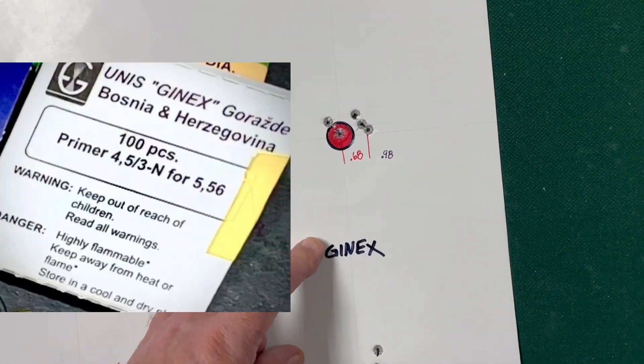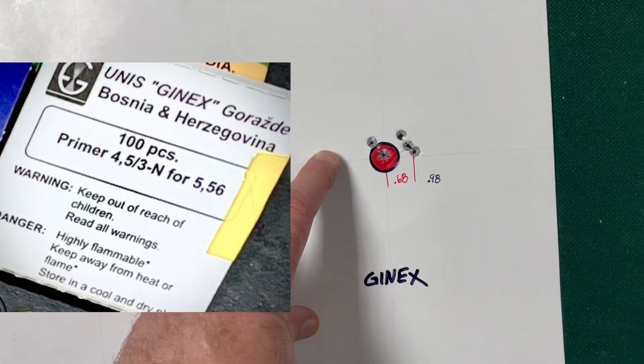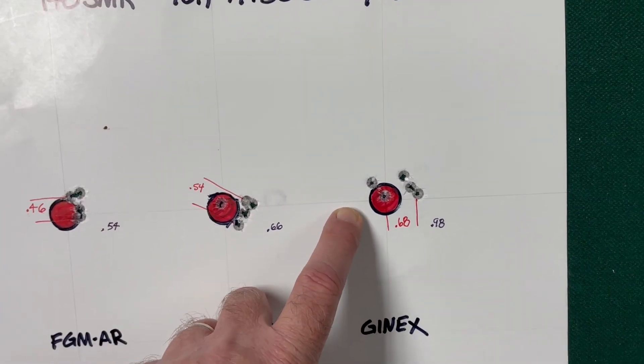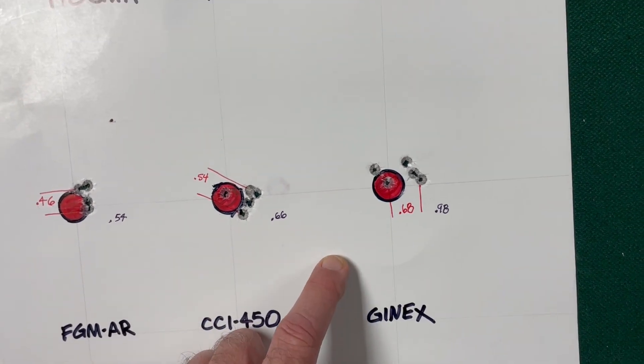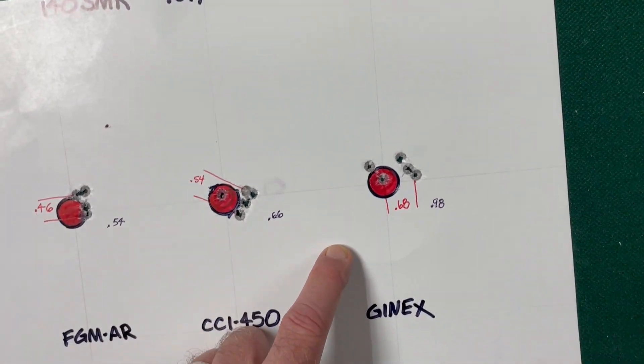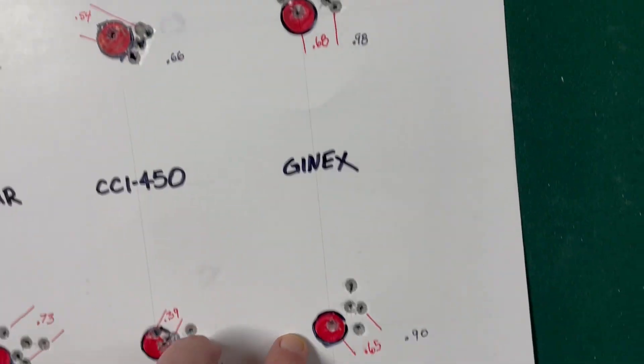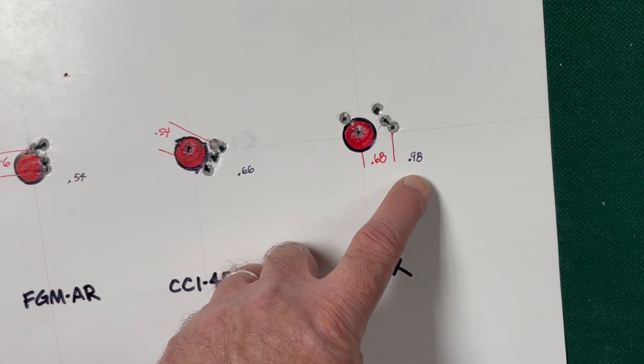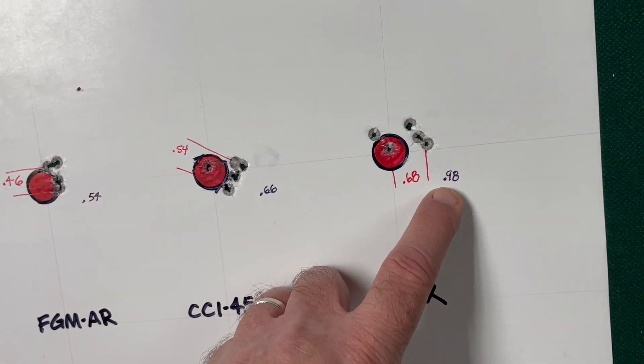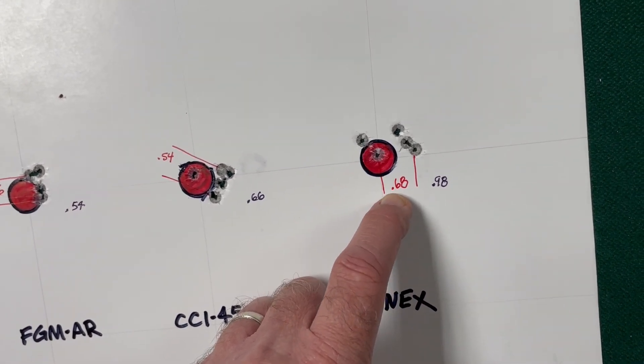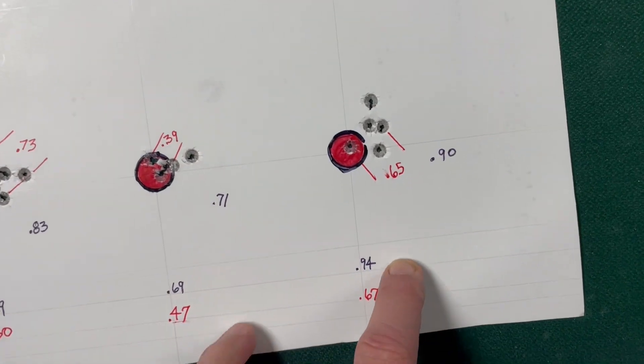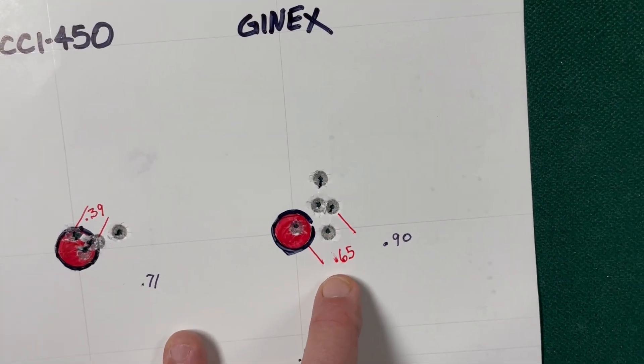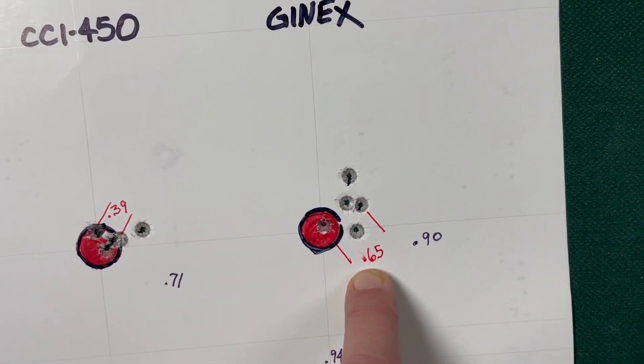And then Gen X, I really didn't expect to do very well. I've never heard of that brand. I guess they're kind of an off-brand. I picked these up at a gun show. They were 10 cents a piece, so I bought 500 of them for 50 bucks. But I wanted to test them. And they grouped at .98 inches with the best four out of five at .68. And then the second group was at .90 with the best four out of five at .65.